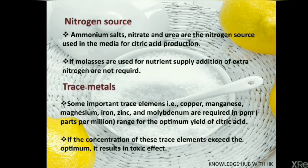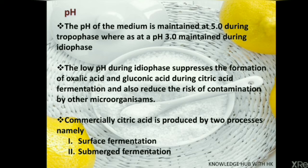Moving on to nitrogen source: ammonium salts, nitrates, and urea are the nitrogen sources used in the media for citric acid production. If molasses are used for nutrient supply, addition of extra nitrogen is not required. Trace elements are important, but in small amounts. If the concentration of trace elements exceeds the optimum, it results in toxic effects. Trace elements such as copper, magnesium, iron, zinc, and molybdenum are required in ppm range for optimum yield. The pH of the medium is maintained at 5 during tropophase, whereas pH 3 is maintained during idiophase. The low pH during idiophase suppresses the formation of oxalic acid and gluconic acid and also reduces the risk of contamination by other microorganisms.